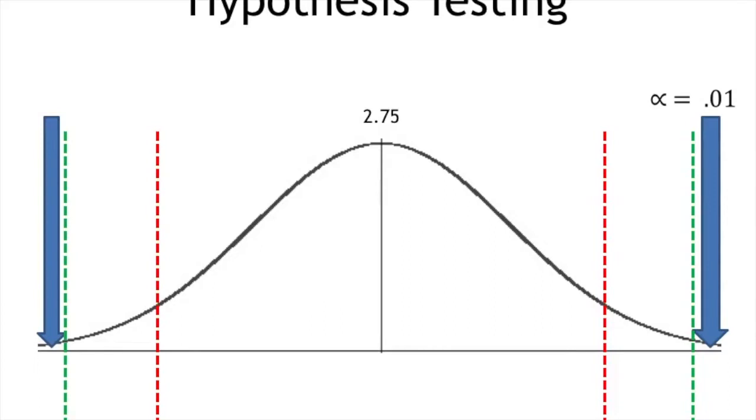But what if I change the significance level to 1%? There's a much, much smaller probability that my 2.85 sample GPA is way out in that rejection area and it becomes much more difficult to reject the null hypothesis.